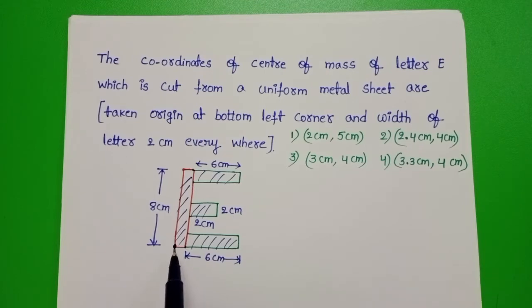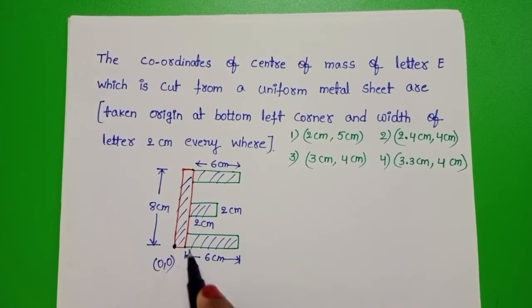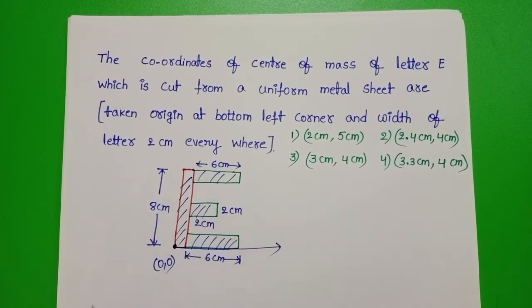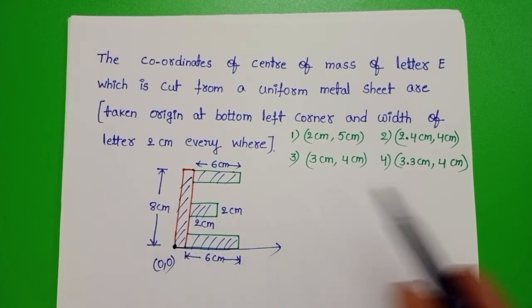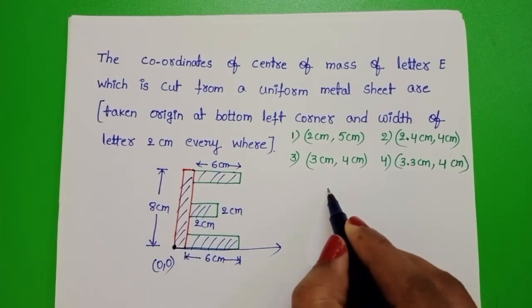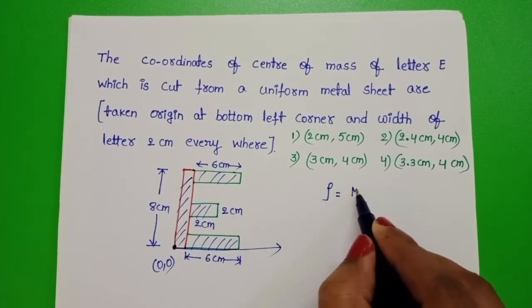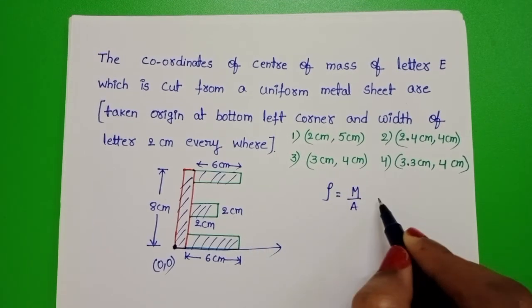From this position we have to find out the center of mass. Take this point as origin, coordinates 0,0. This is x-axis and y-axis. Mass of the first part - to find out the mass, uniform mass distribution, rho equals mass by area of cross section. From this, mass equals rho into A.